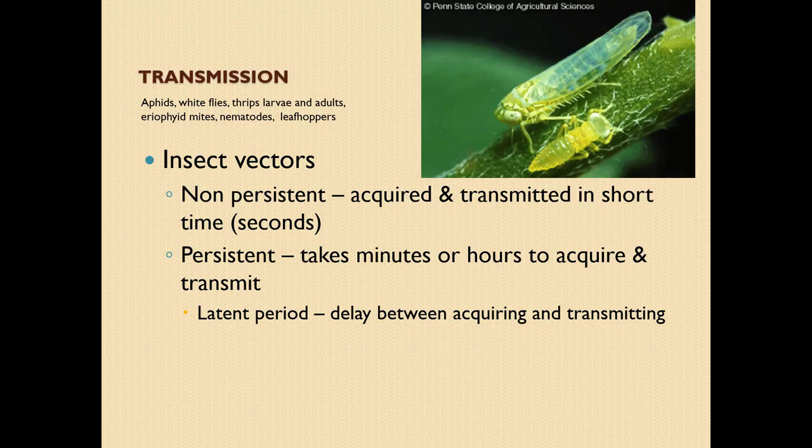Transmission can happen through aphids, whiteflies, thrips, larvae and adults, eriophid mites, nematodes, leafhoppers, etc. It can be non-persistent — acquired and transmitted in a short time, usually in seconds. And then persistent — it could take minutes or hours to acquire and transmit. There's also a latent period: a delay between acquiring and transmitting.